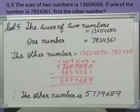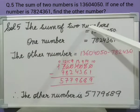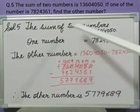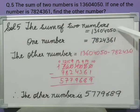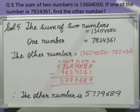Question number 5. The sum of two numbers is 1 crore 36,04,050. If one of the numbers is 78,24,361, find the other number. The question is saying two numbers are added, and after adding those two numbers, we got the sum that is 1 crore 36,04,050.